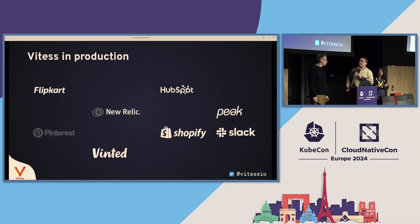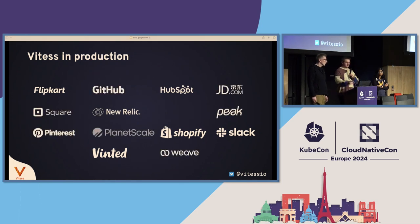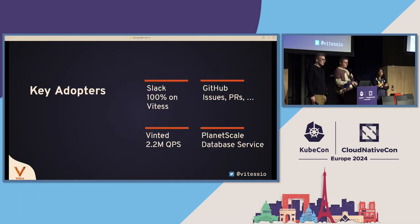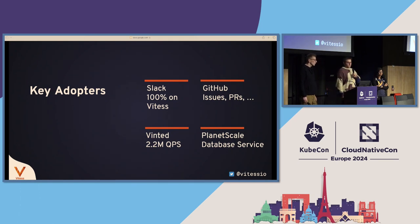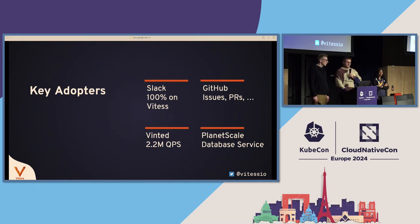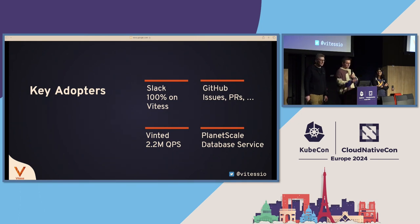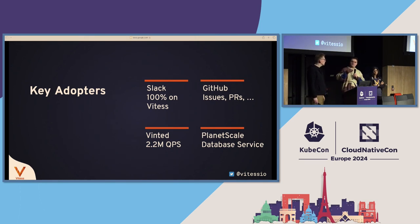VITES is widely used in production by many companies from small to extremely large. Key adopters include Slack, who is running 100% on VITES — every time you send a Slack message, it's going through VITES. We also have GitHub, running all of their issues and pull requests on VITES, with a little bit less than a million QPS on average. We also have Vinted, doing about 2.2 million QPS, and PlanetScale Database Service, with approximately 10,000 different VITES clusters running in production.